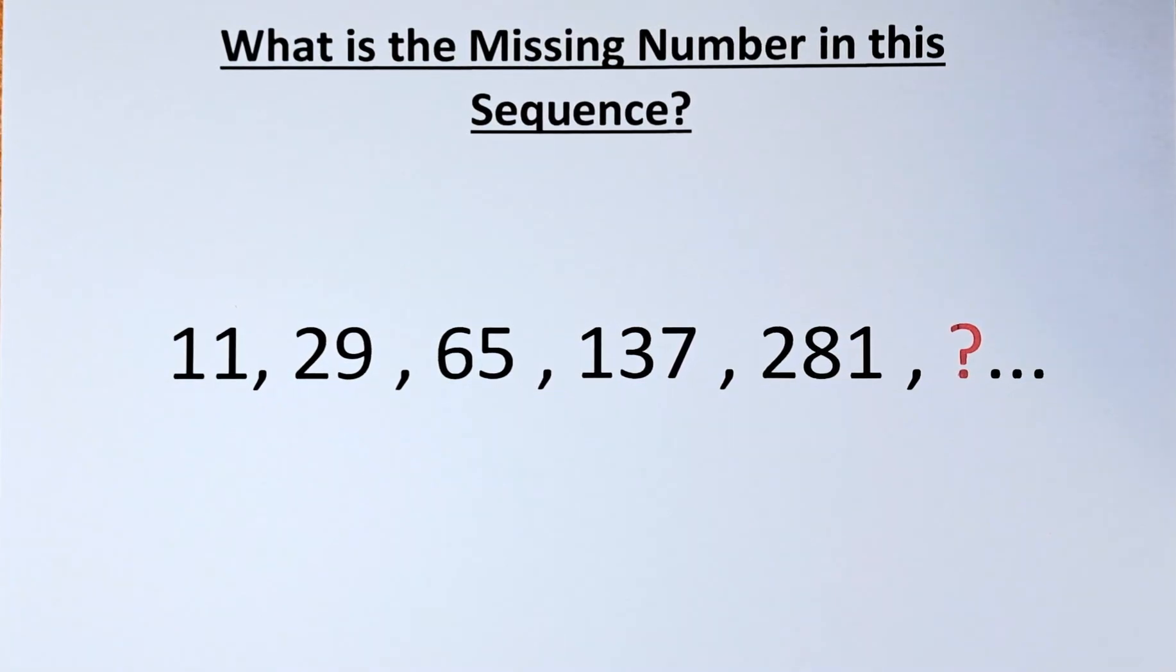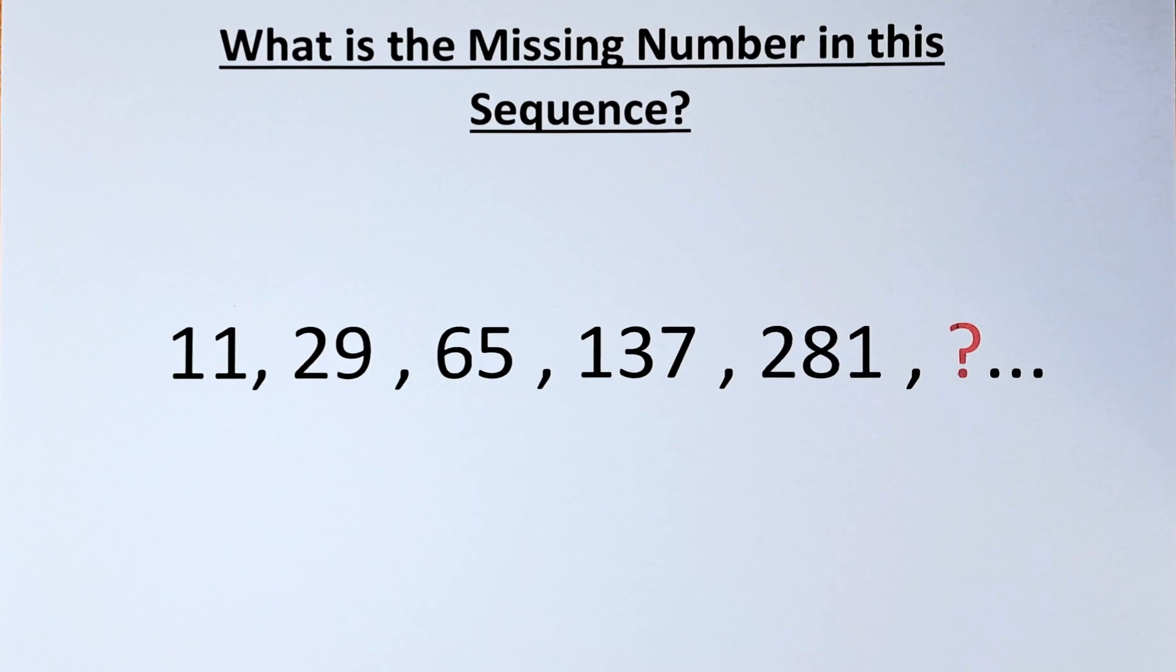What is the missing number in this number sequence? The numbers in this series are as follows: 11, 29, 65, 137, 281 and a question mark.